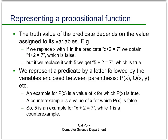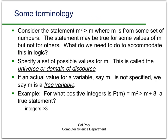For notation, we generally use a capital P or capital Q to represent propositional functions — similarly to how we use small p and q for propositions, but uppercase for functions. The variables go inside the parentheses. A quick terminology note: an example for a propositional function P(x) is a value for which P(x) is true — so 5 is an example for x plus 2 equals 7. A counterexample is a value of x for which P(x) is false — so x equals 1 is a counterexample.